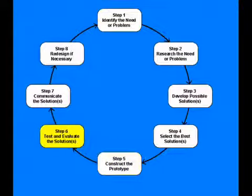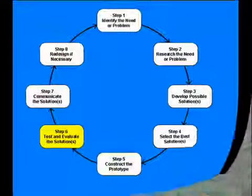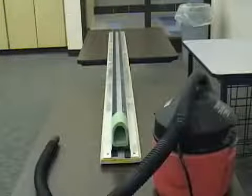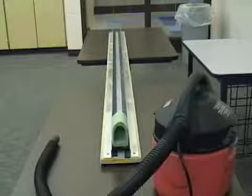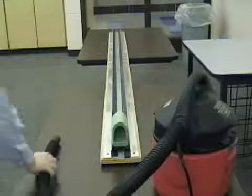Once prototypes were created, the next step was to test and evaluate our solutions. Testing the vehicles was done by first attaching the vehicle to the magnetic platform. Then the vehicle was given a quick blast of air from the shot back as its source of energy. The vehicle was designed to travel the length of the track.